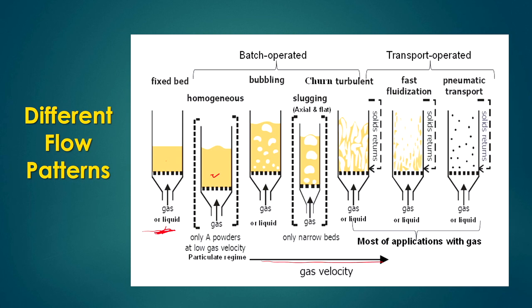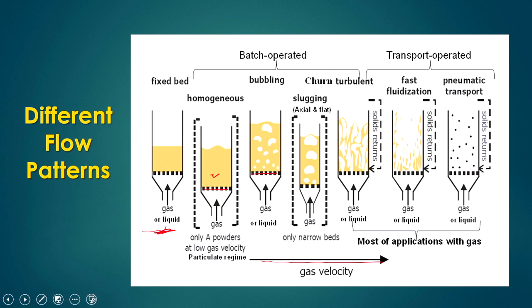Beyond the minimum flow condition, if you increase the gas velocity further, there is a tendency to form bubble-shaped voids inside the fluidized bed. Bubbles form from the distributor through which gas is supplied. Gas passes through the bed as a dispersed phase of bubbles. This is called the bubbling flow pattern.